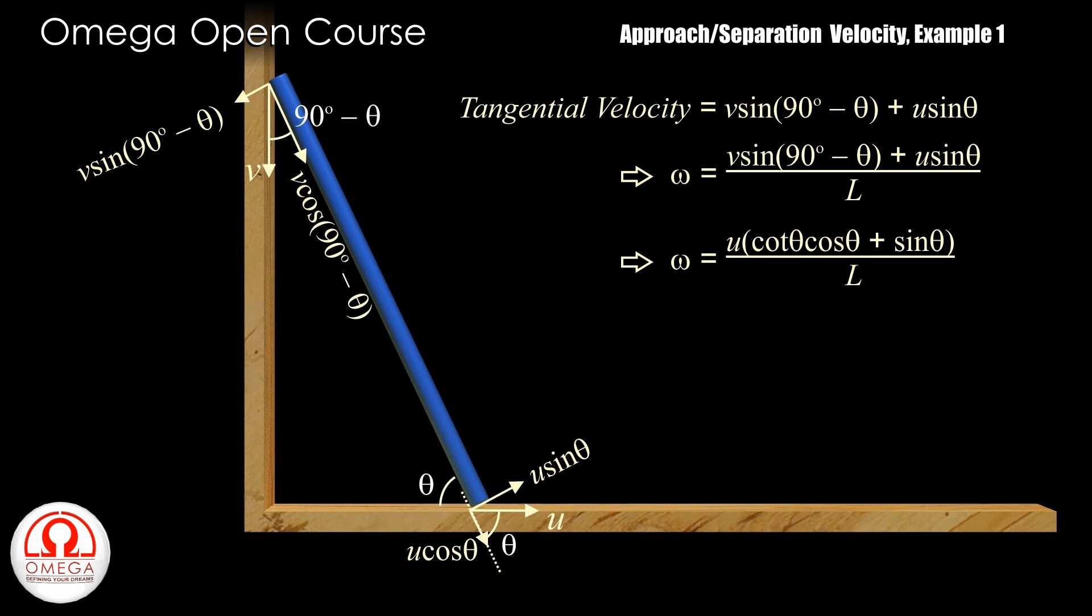we get omega is equal to u cot theta into cos theta plus sin theta by L. Putting cot theta is equal to cos theta by sin theta, we get omega is equal to u cos square theta by sin theta plus u sin theta by L.